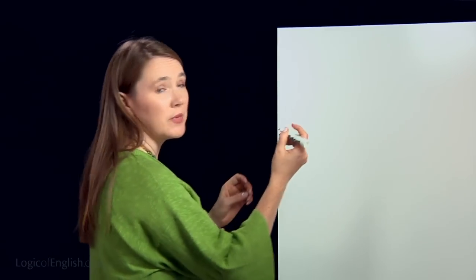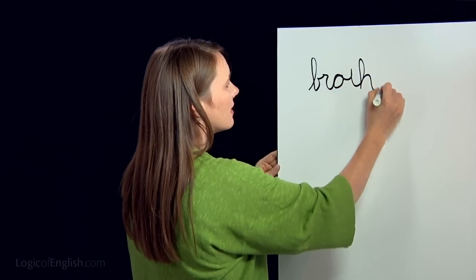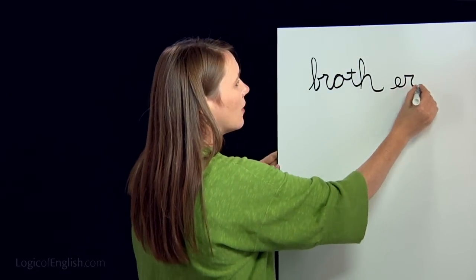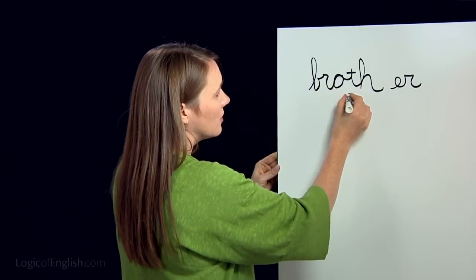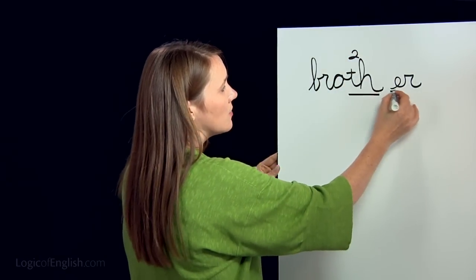The sixth word is 'brother' — 'Our brother is feeling sick today.' Say to spell: broth-er. First syllable: broth — B-R-ah-th. Second syllable: ur. Write it. First syllable is B-R-ah-th, second syllable is ur. Underline the 'th' — it's the second sound — and underline the 'ur.'